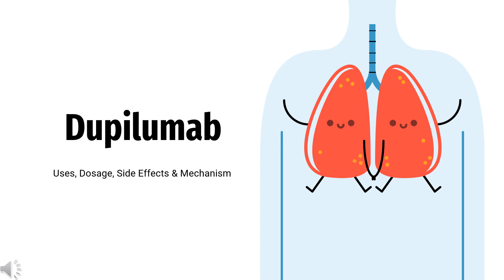Dupilumab is a monoclonal antibody used to treat moderate to severe atopic dermatitis, asthma, and nasal polyps accompanied by chronic rhinosinusitis in adolescents and adults.